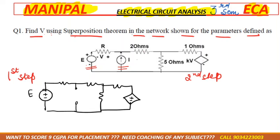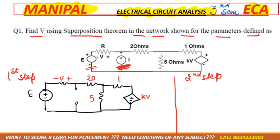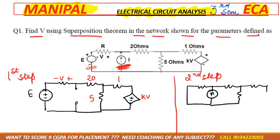In the circuit, the values are: 2 ohm, 5 ohm, 1 ohm, and the voltage source e with plus-minus markings. Voltage v is also marked with plus-minus. In the second step, we take the second source i and eliminate the first source e by short-circuiting the voltage source. Resistances remain as-is, and the dependent source is included again. The values are 2 ohm, 5 ohm, 1 ohm, and kv.